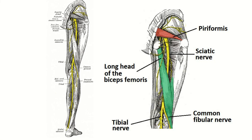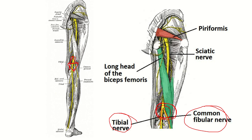It then passes anterior to the long head of biceps femoris, reaching the popliteal fossa. At the upper end of the popliteal fossa — this diamond-shaped space — the sciatic nerve divides into two nerves: the tibial nerve and the common peroneal nerve. They are essentially the sciatic nerve divided into two branches.